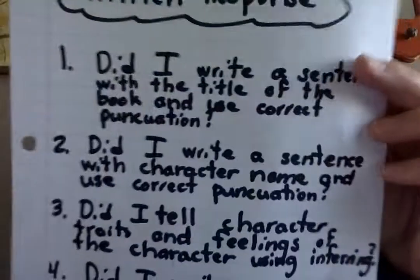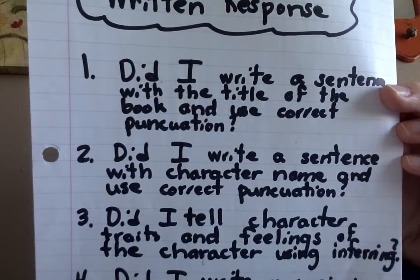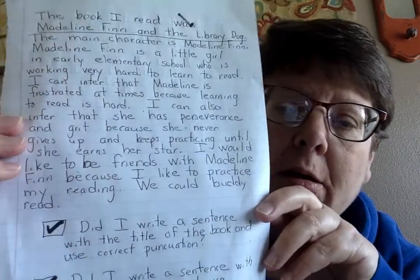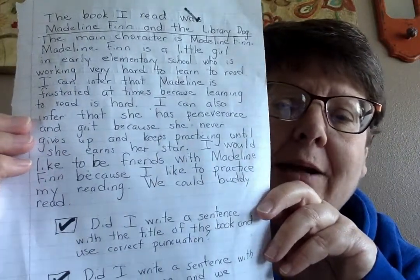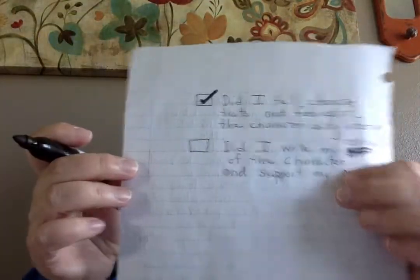The fourth question says: did I write my opinion of the character and support my opinion? I wrote, 'I would like to be friends with Madeline Finn because I like to practice my reading — we could buddy read.' So now I can go to my rubric and mark that off because I completed it.